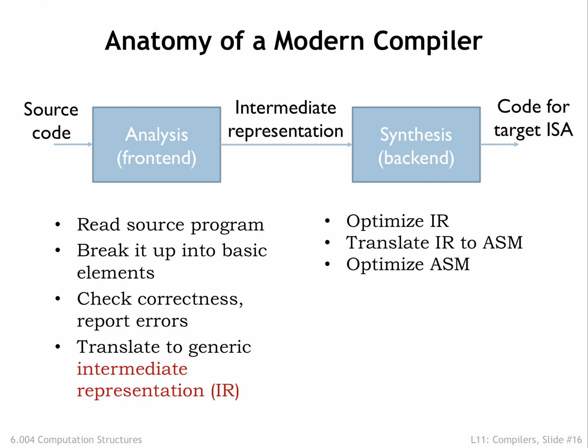Once the intermediate representation is in its final optimized form, the back-end generates code sequences for the target instruction set architecture and looks for further optimizations that take advantage of particular features of the ISA. For example, for the beta ISA, we saw how a C move followed by an arithmetic operation can be shortened to a single operation with a constant operand.